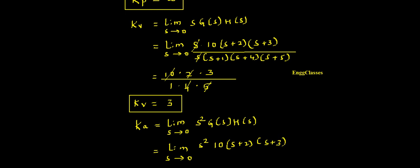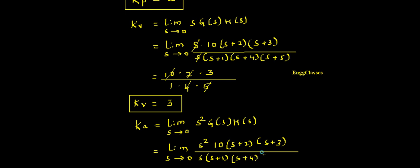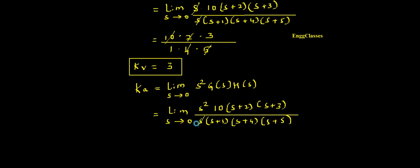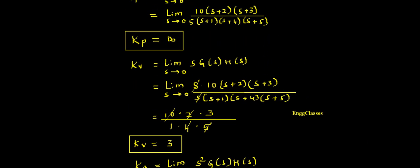This gets divided by s(s+1)(s+4)(s+5) in the denominator. The s² in the numerator and the one s in the denominator cancel, leaving one s remaining in the numerator. If I substitute s equal to 0, I get 0. So the acceleration error constant Ka equals 0.